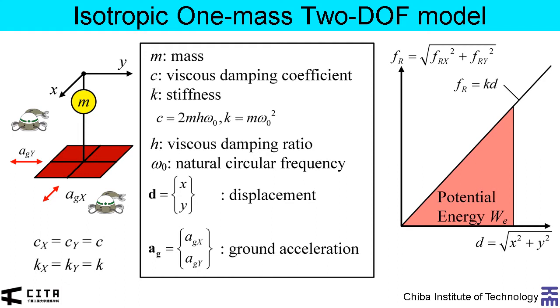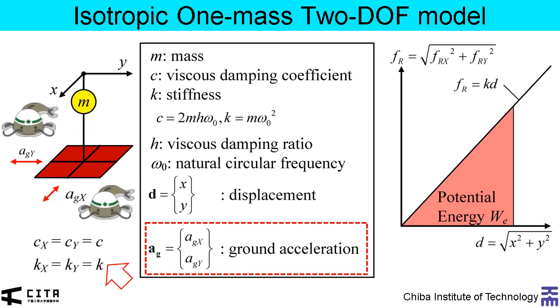This is an illustration of an isotropic one-mass two-degree-of-freedom model. The viscous damping coefficient and stiffness in x and y directions are assumed to be equal. This model is subjected to horizontal bidirectional ground accelerations. Here shows the linear relationship of restoring force and displacement. The potential energy is defined as the area of the red-painted triangle.